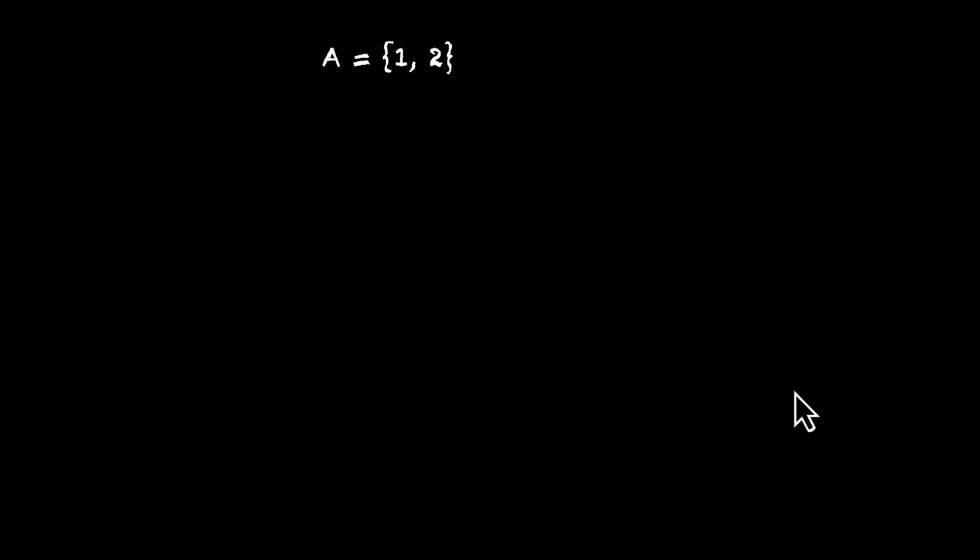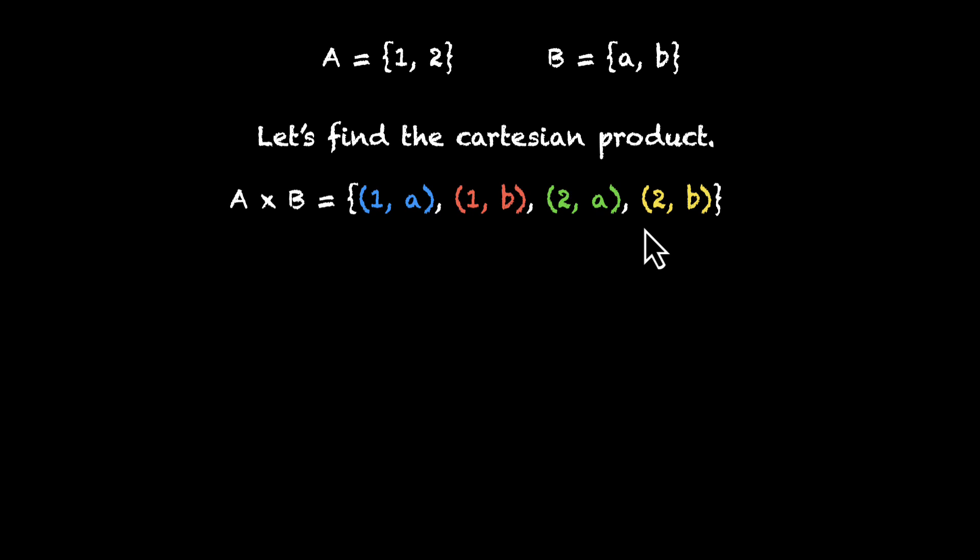So first our job is to figure out the Cartesian product of A and B. Let's do that. A times B, that's going to be this: one is with A, one is with B, two with A, and then two with B. This is what we get.